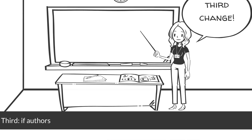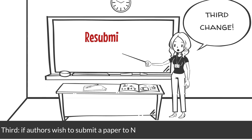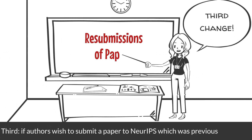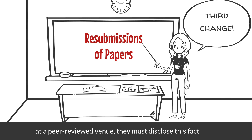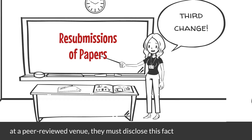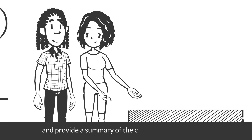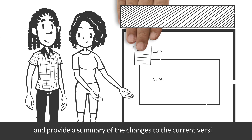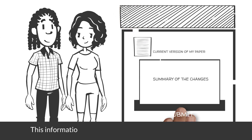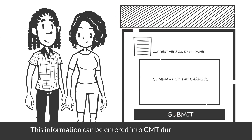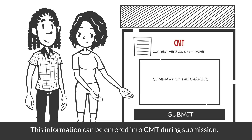Third, if authors wish to submit a paper to NeurIPS which was previously rejected at a peer-reviewed venue, they must disclose this fact and provide a summary of the changes to the current version. This information can be entered into CMT during submission.